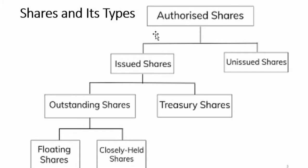In summary, we can categorize shares this way: authorized shares, then issued and unissued, then outstanding and trading shares, and further into floating and closely held shares.